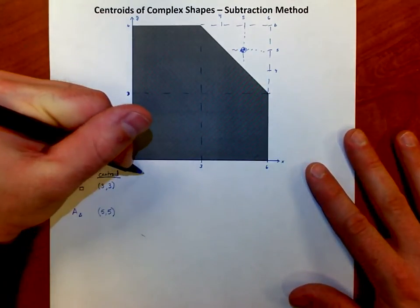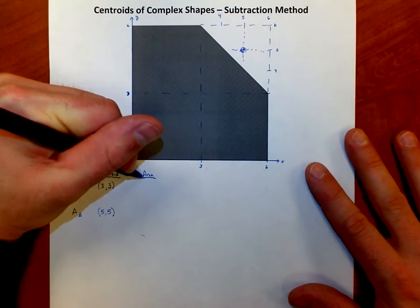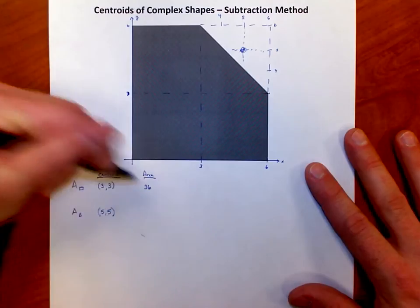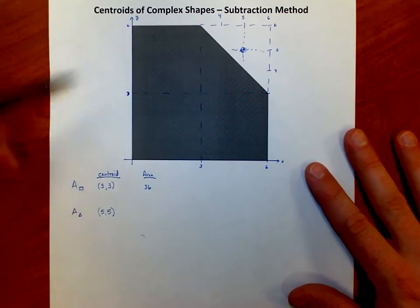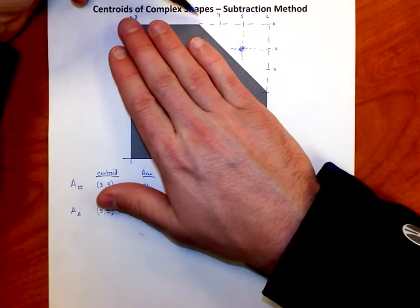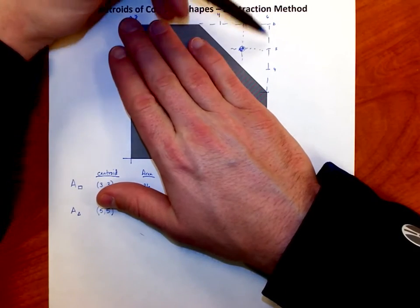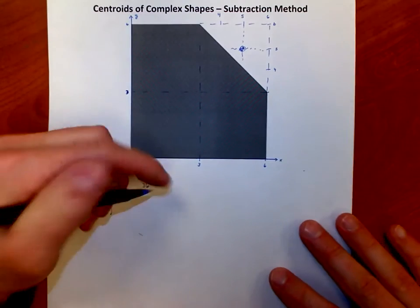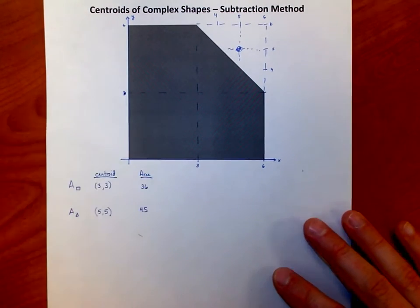So then what I'm going to do is take the area of each shape. And the area of the square, it's a 6 by 6 square, so the area is 36. As far as the triangle goes, it's 1 half base times height. The triangle, the white area, has a base of 3 and a height of 3. 3 times 3 is 9, and half of that is 4.5.